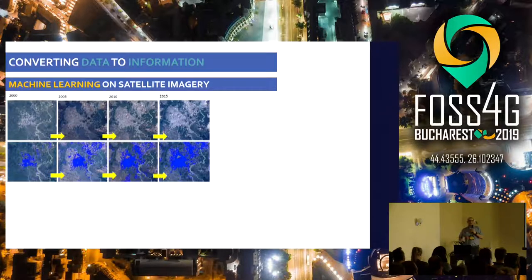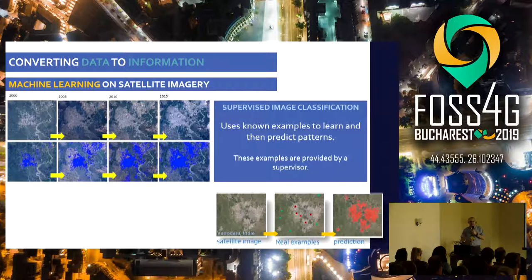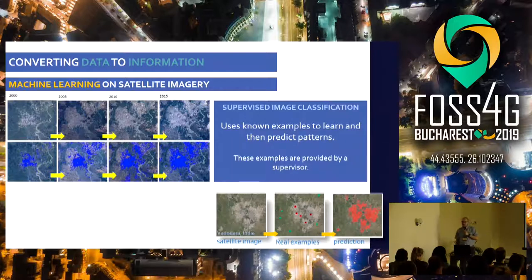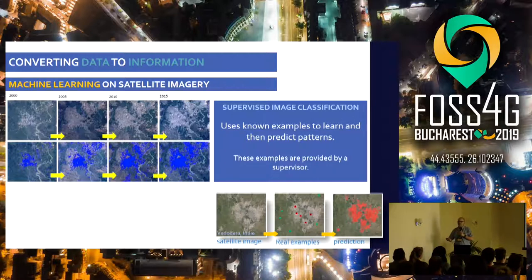The main challenge is how we convert all this data that is collected into meaningful information that can really be used to improve decision-making. There are many approaches for machine learning — supervised, unsupervised, semi-supervised. In the remote sensing domain, supervised image classification is frequently used. In supervised image classification, we use labeled examples to train the machine to learn the characteristics of whatever we want to classify.